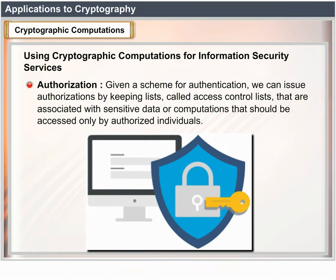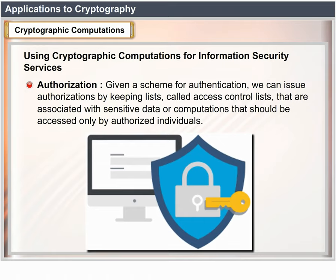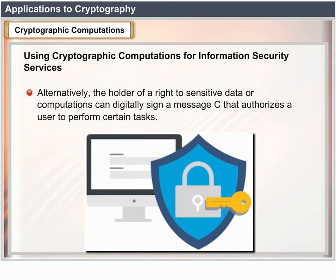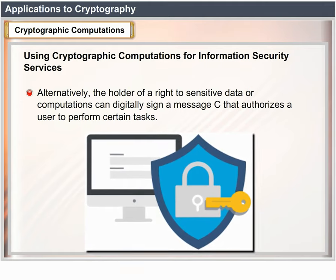Alternatively, an authenticator can issue a challenge to a user in the form of a random message M that the user must immediately digitally sign for authentication. Authorization: given a scheme for authentication, we can issue authorizations by keeping lists called access control lists that are associated with sensitive data or computations that should be accessed only by authorized individuals.